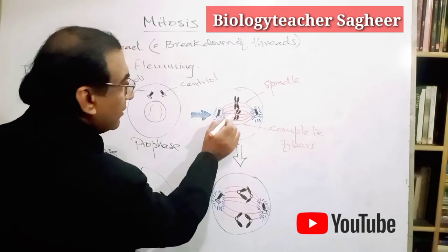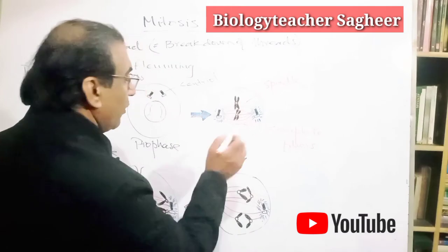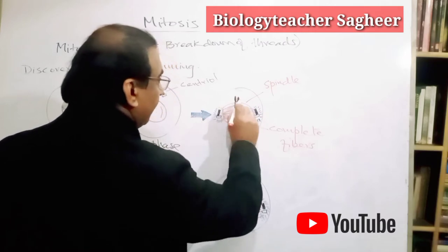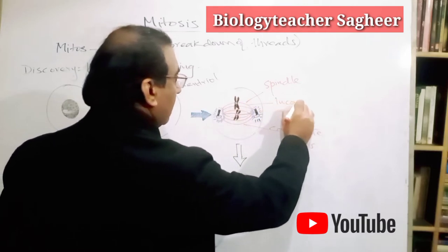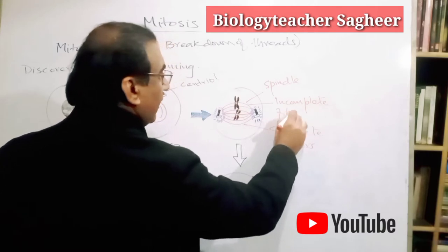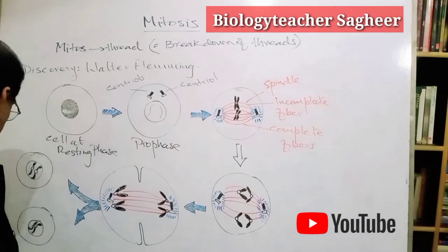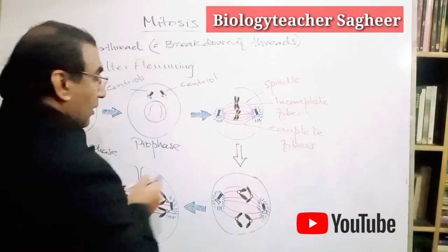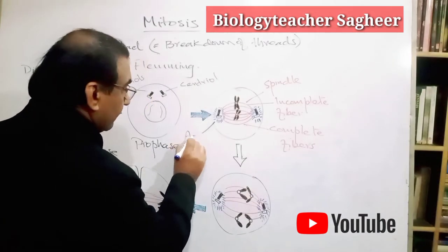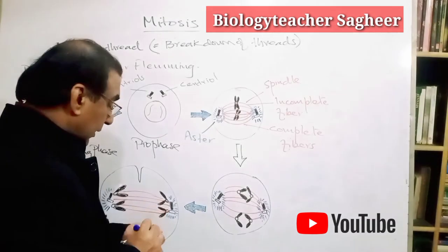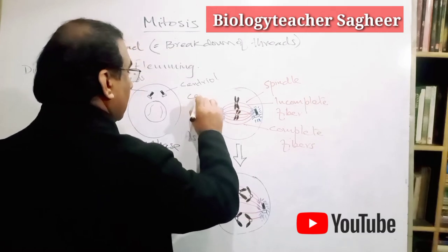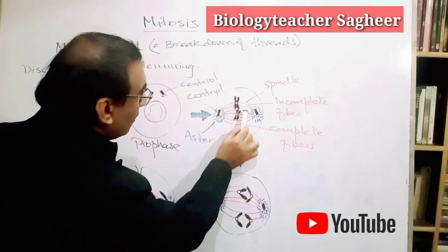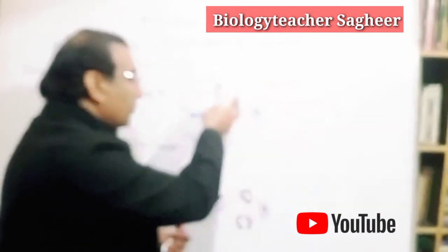There are others which are attached with the centrioles — these are known as incomplete fibers. Around the centrioles there is a star-shaped structure called the aster. This whole structure is the spindle, on which the chromosomes are attached.